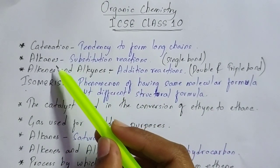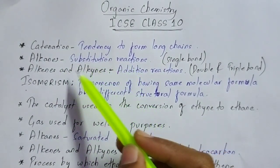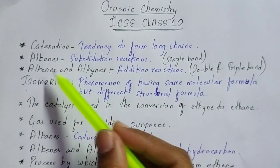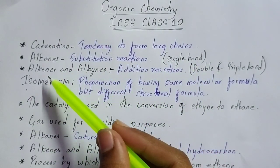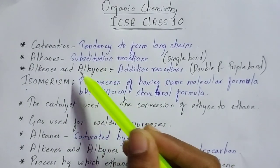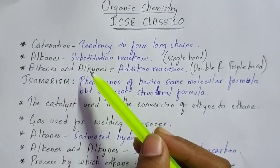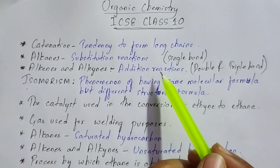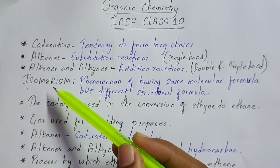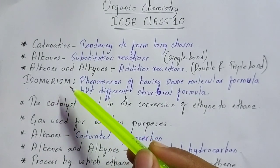You must know that alkanes undergo substitution reaction. Alkanes have single bond, alkenes have double bond, and alkynes have triple bond. Alkanes undergo substitution reaction, whereas alkenes and alkynes undergo addition reaction.